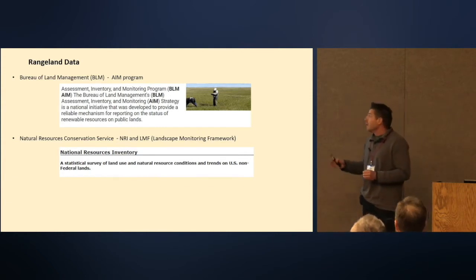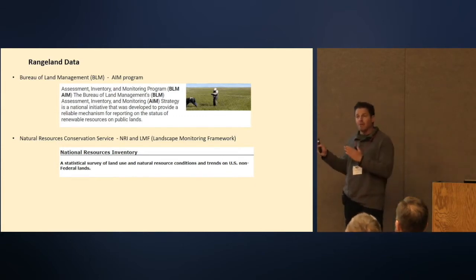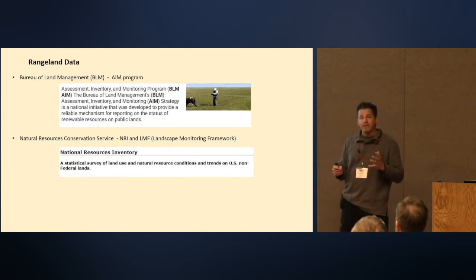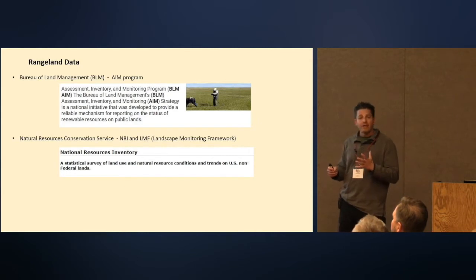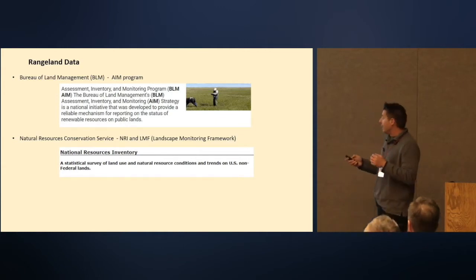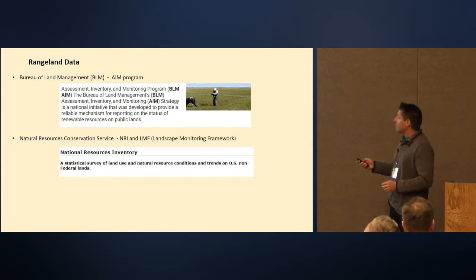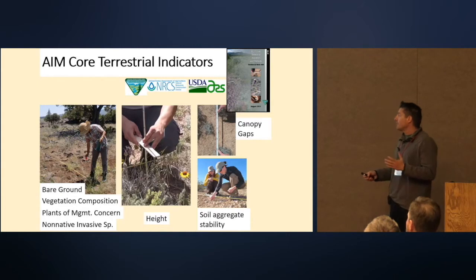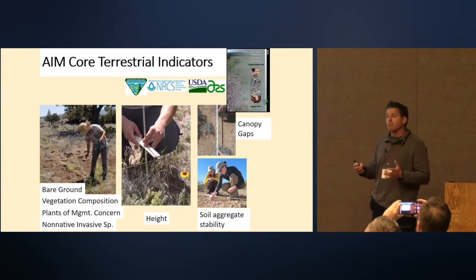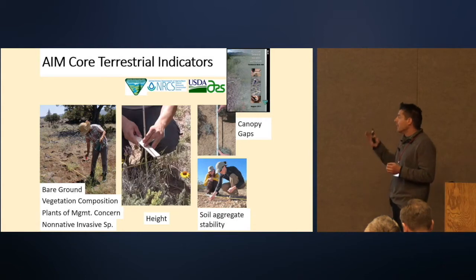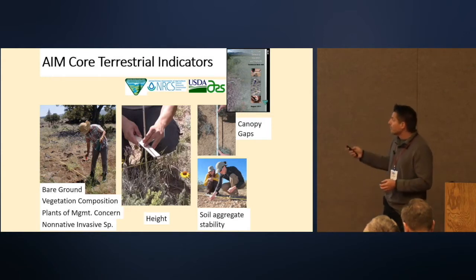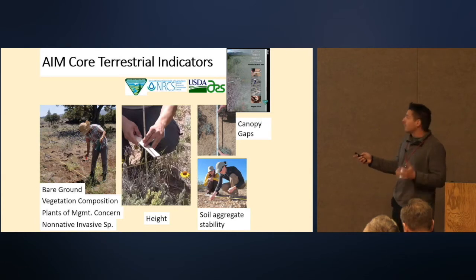The Bureau of Land Management has the AIM data, and the Natural Resource Conservation Service has NRI and LMF data. Basically, the only thing you really need to know about those data sets is that they are a standard data set collected using very stringent methodologies, and they are essentially the same even though they're collected from different organizations. Standard methodologies include things like bare ground, canopies, and species inventories — very common methodologies done in a standardized fashion.